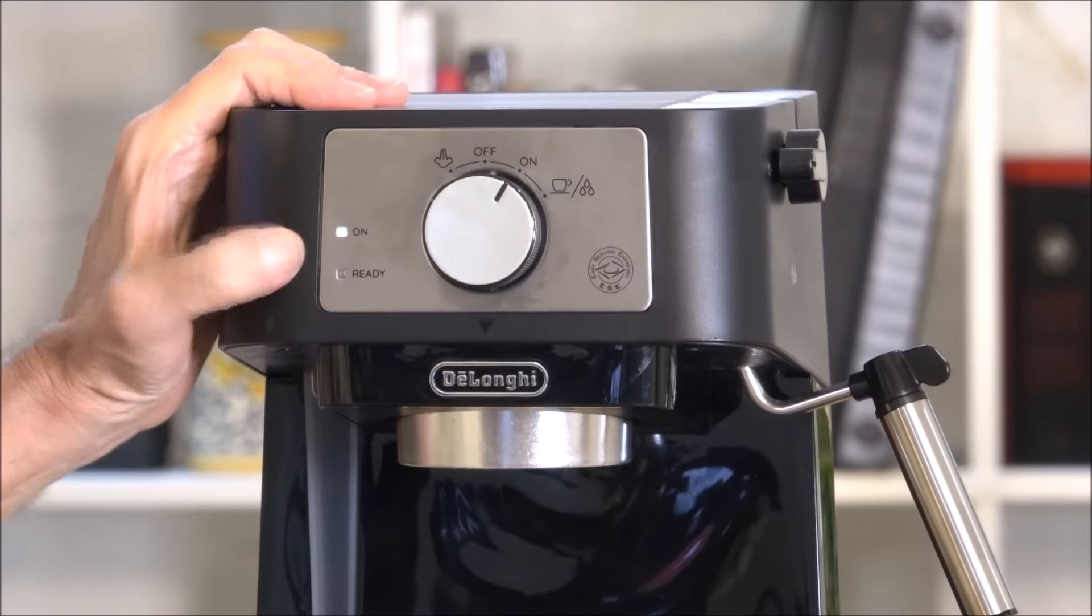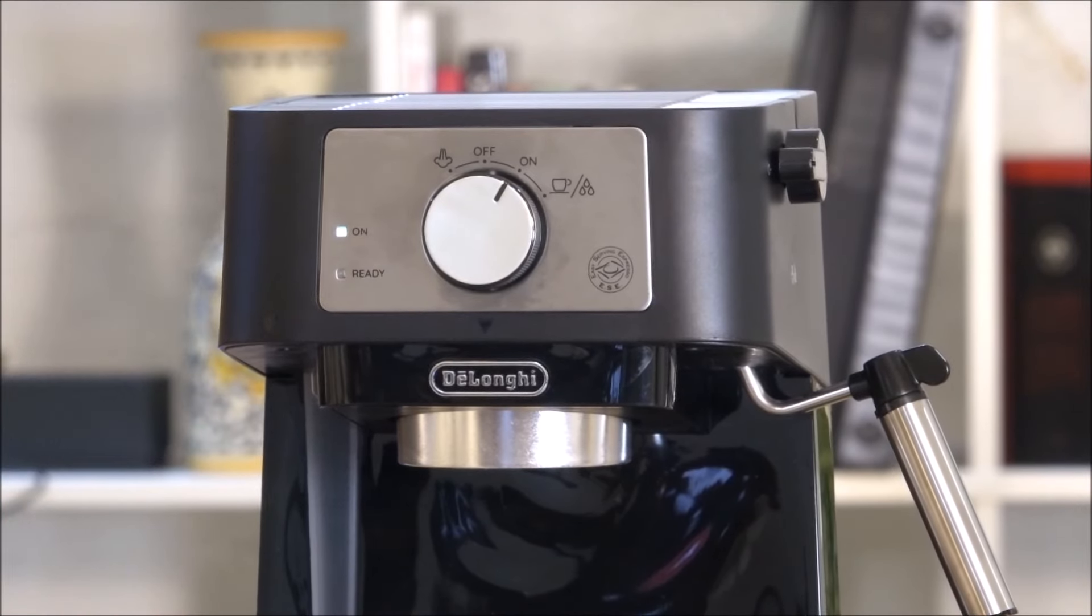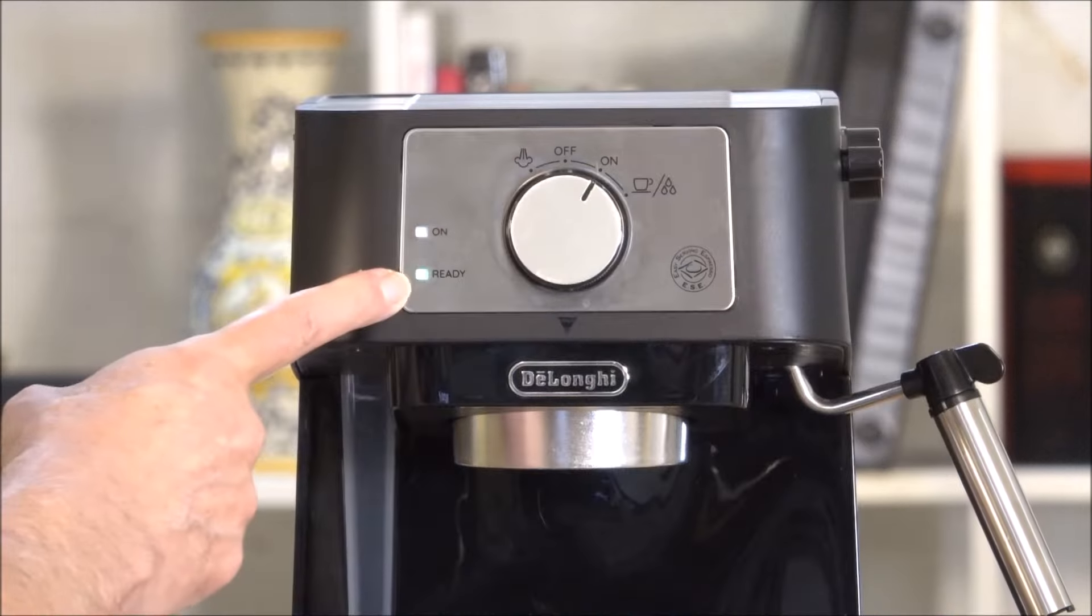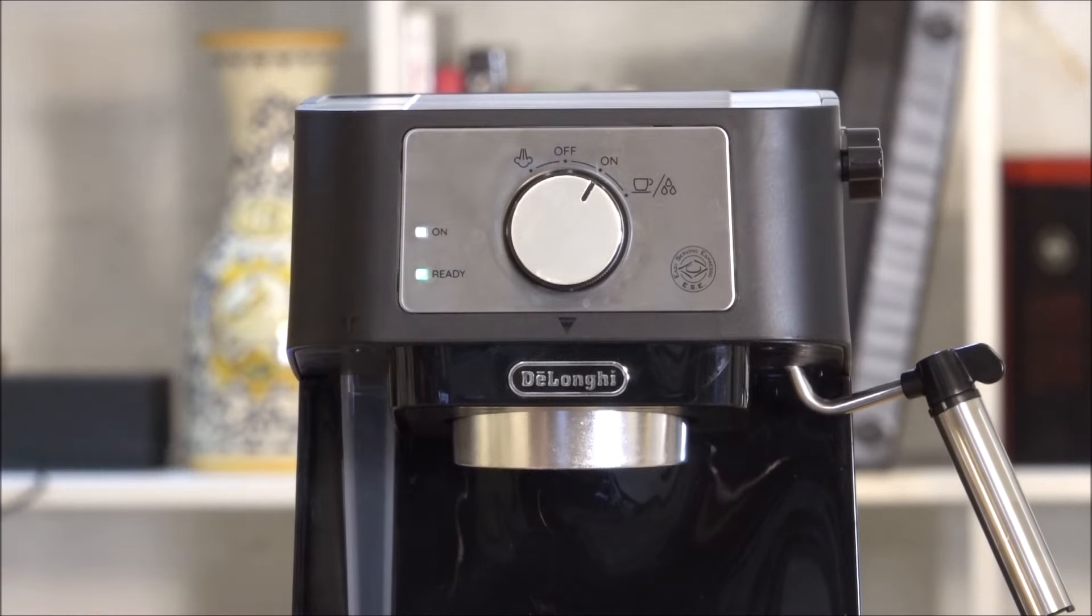You turn it on, you see this little light comes on and it starts the boiler. Very quickly, the ready light comes on and when the ready light comes on, you're ready to make Espresso.